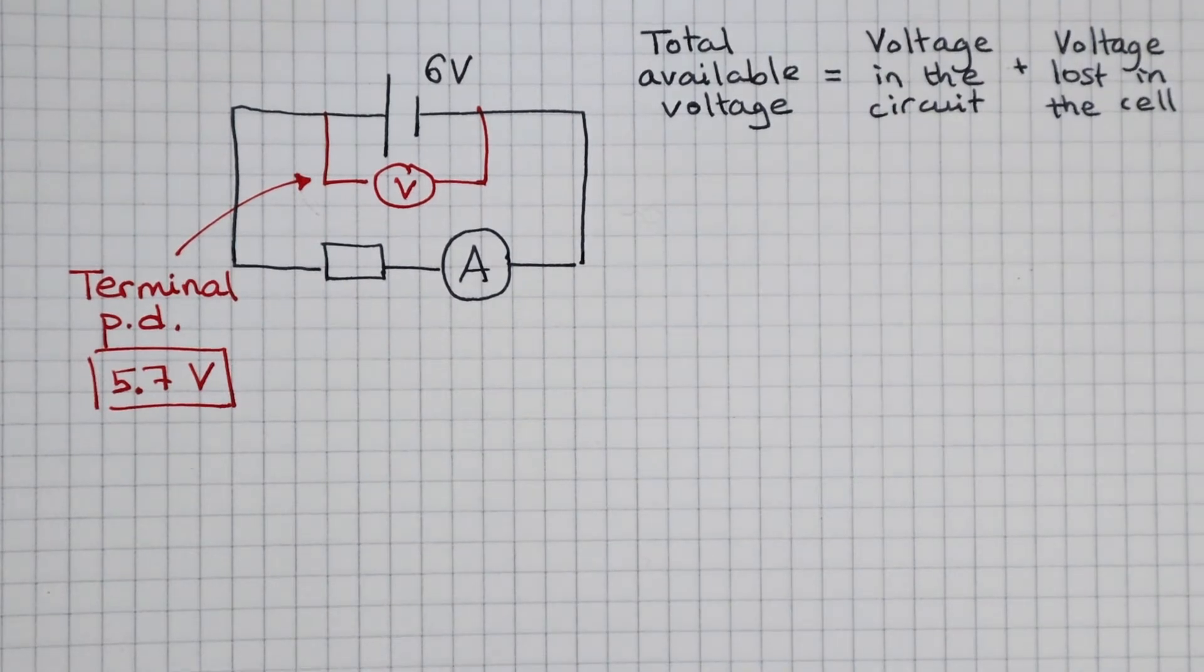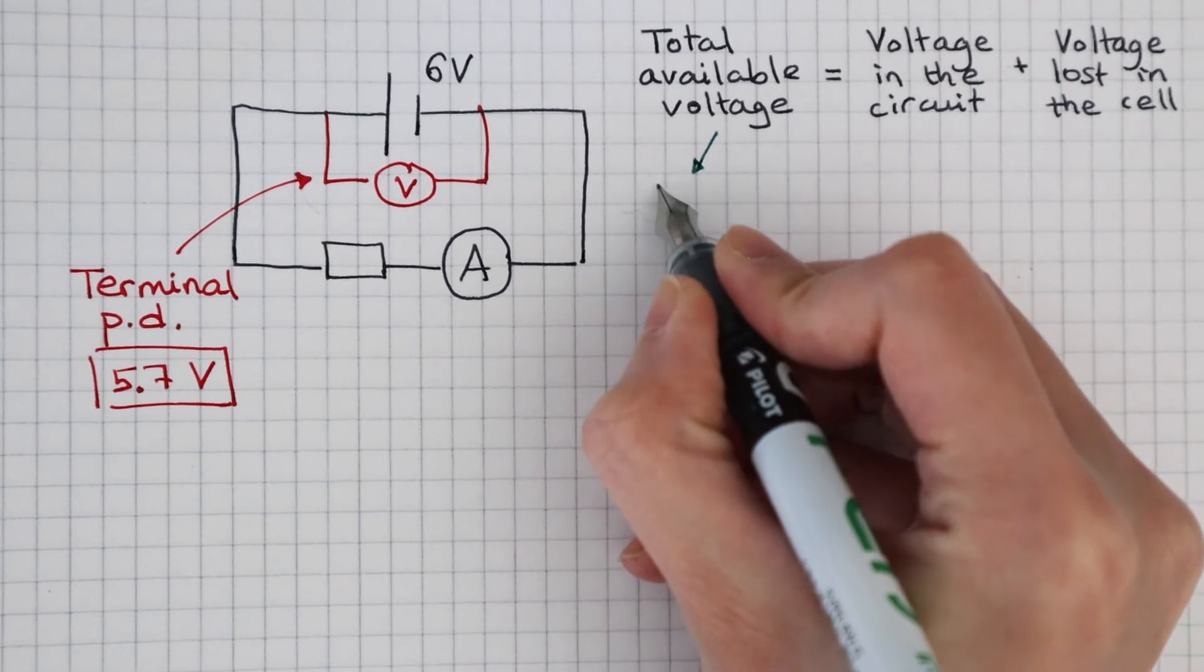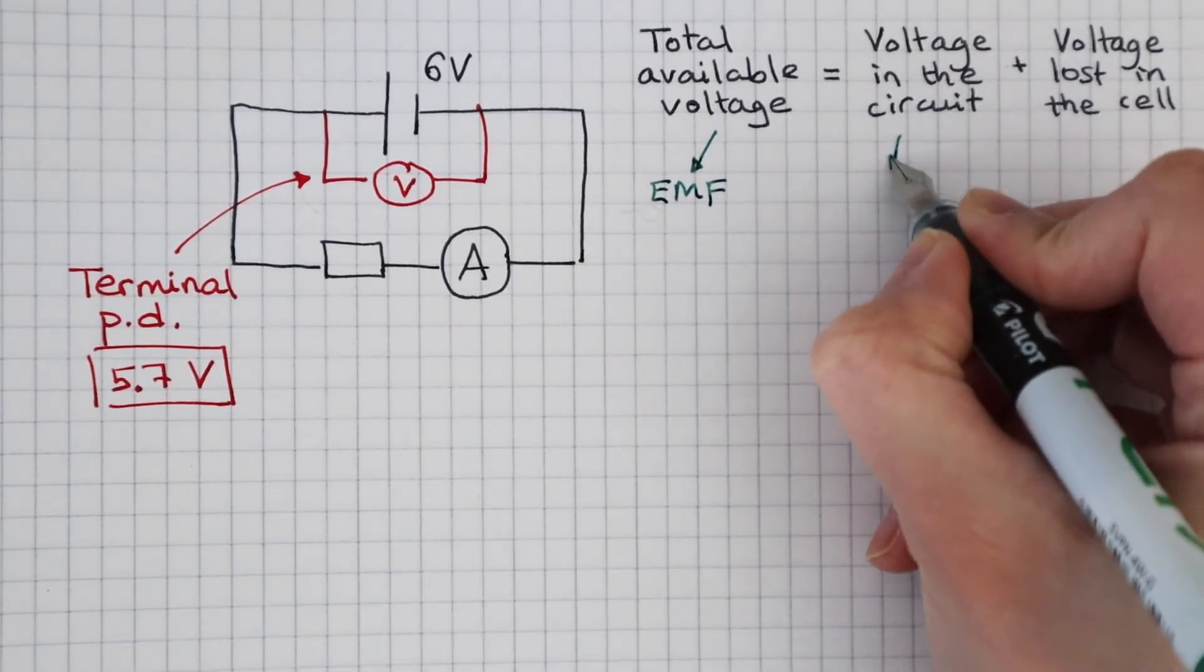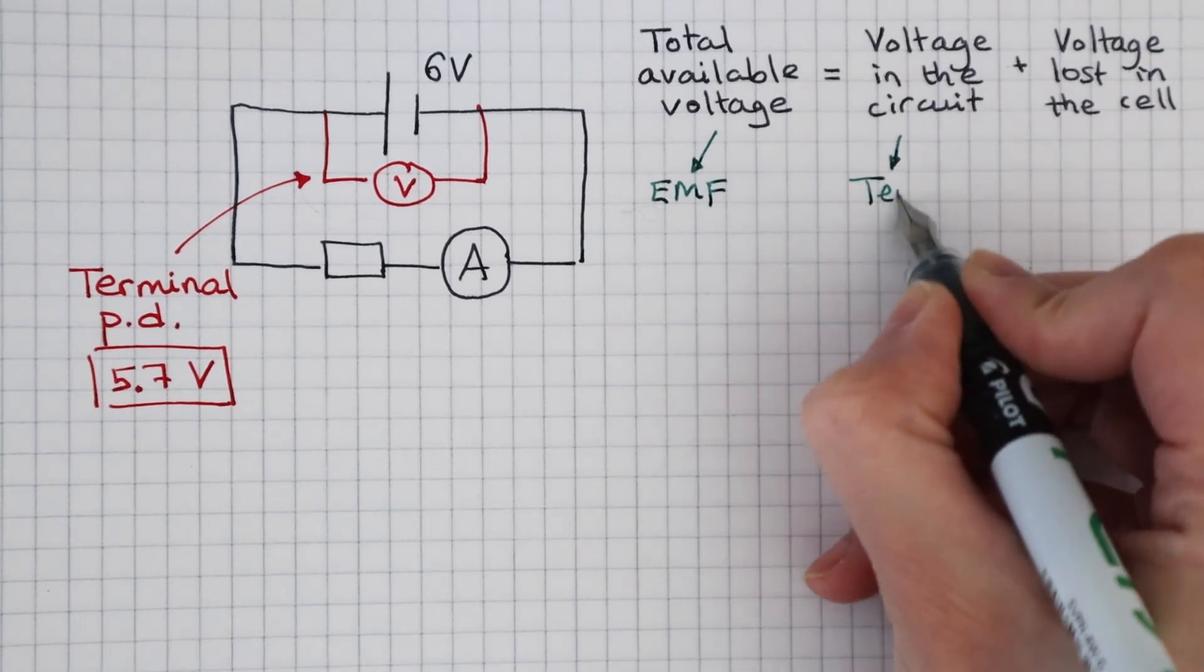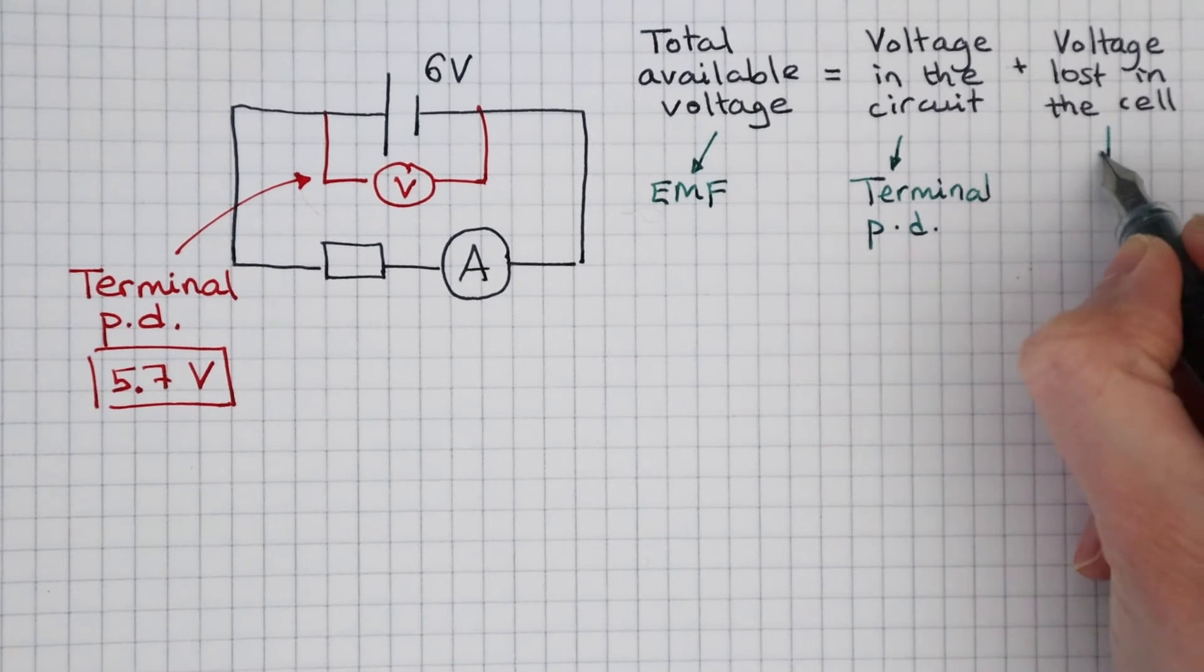But there are special names for these. The total available voltage is known as the EMF. The voltage in the circuit is the terminal PD. The voltage lost in the cell is the lost volt.